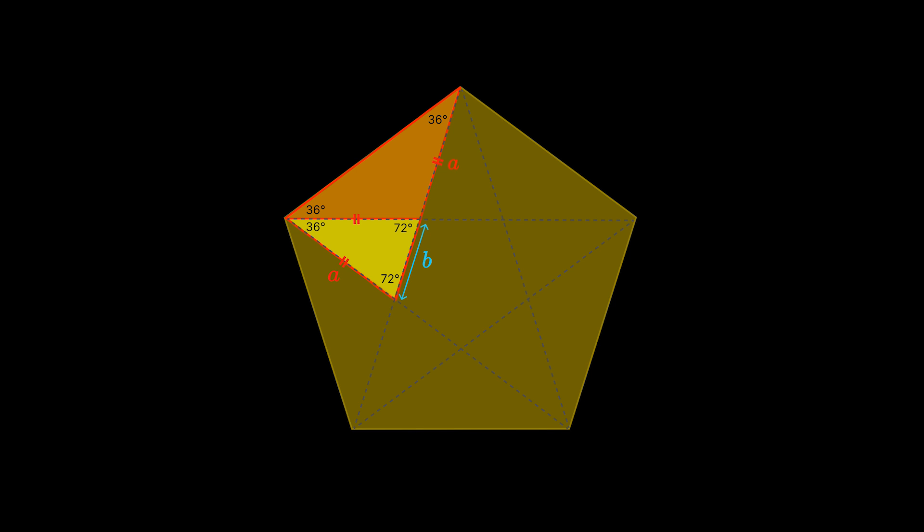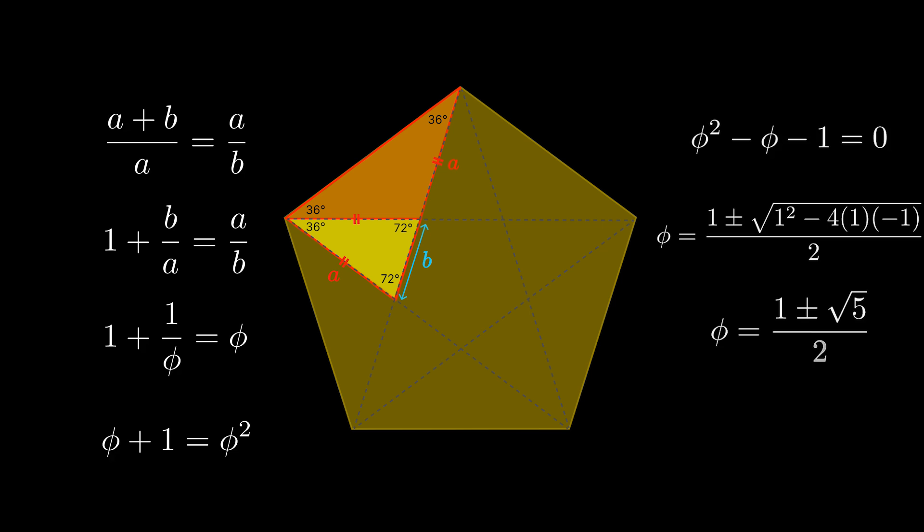Just like the golden rectangle where we cut out a square to get a similar rectangle, with the golden triangle we cut out this isosceles triangle to be left over with the similar golden triangle down the bottom here. The similar triangles again give us this ratio, a plus b over a is equal to a over b, which then give the same quadratic equation and the same golden ratio which we had from the golden rectangle.